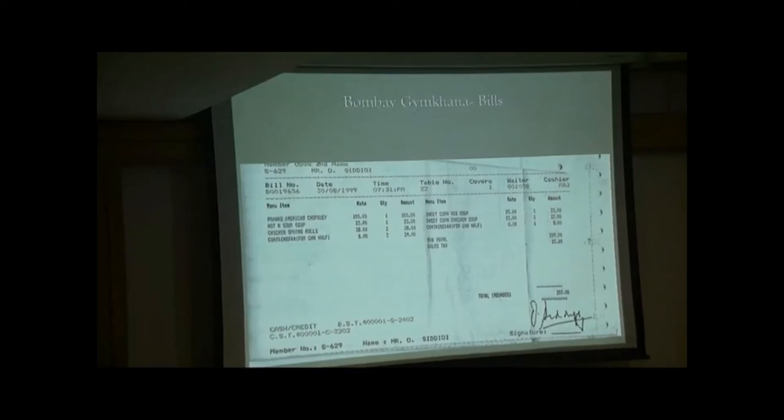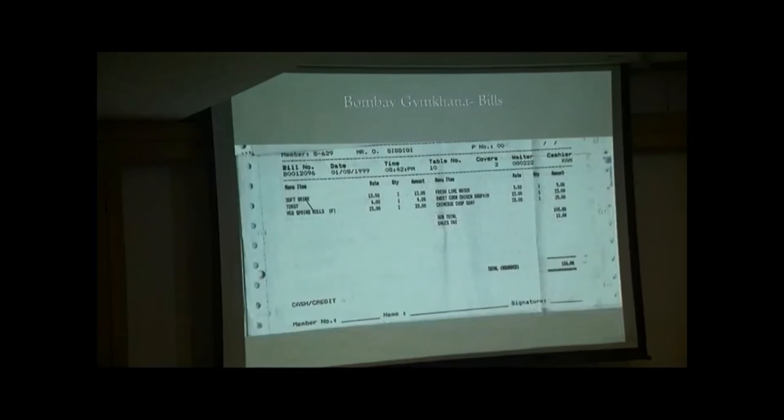The repeat menu item. One front American chop suey. One hot and sour soup. One chicken spring roll. One sweet corn wet soup. One sweet corn chicken. Extra container. Extra charge. One mobile.